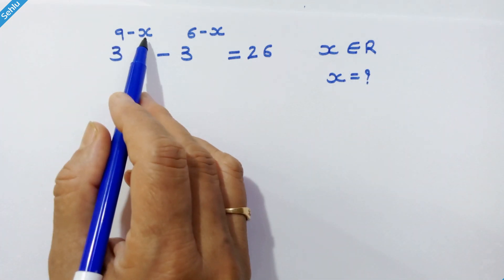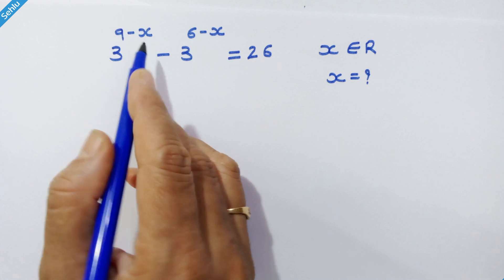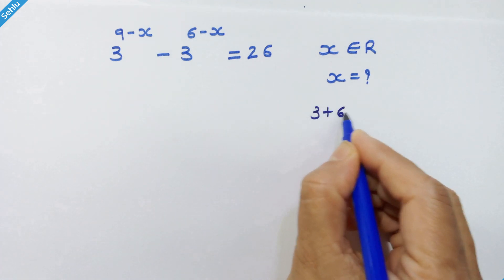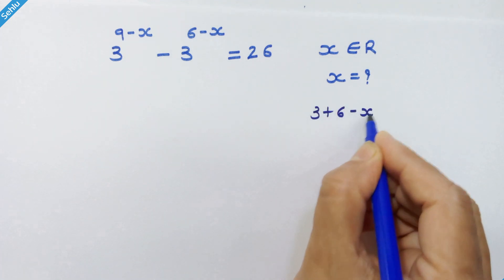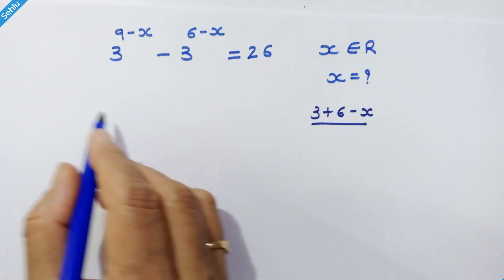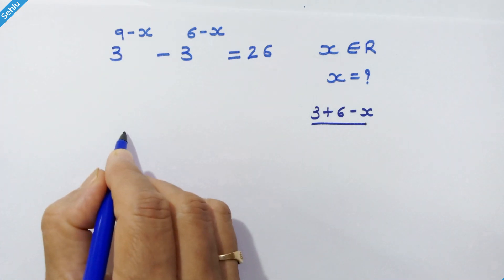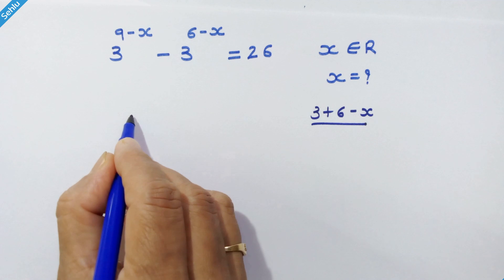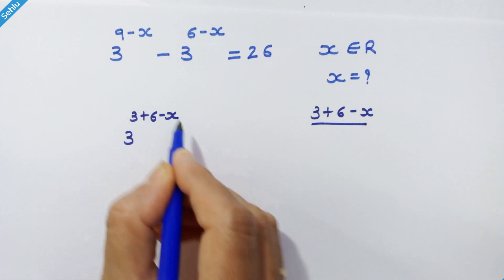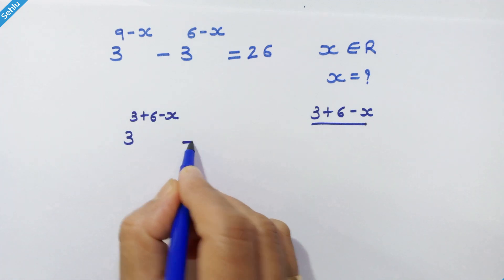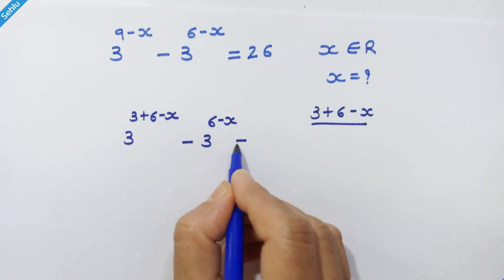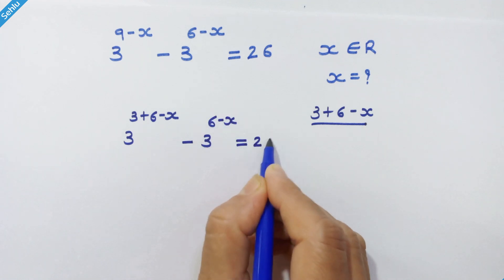Here, 9 minus x can be written as 3 plus (6 minus x). So let's substitute that. We have 3 raised to (3 plus 6 minus x), minus 3 raised to (6 minus x), is equal to 26.